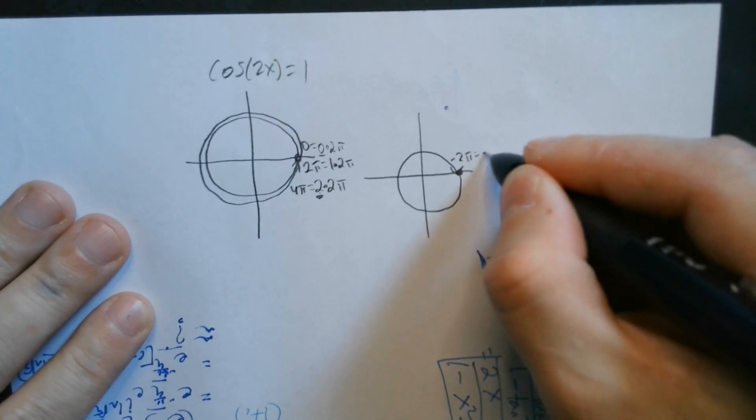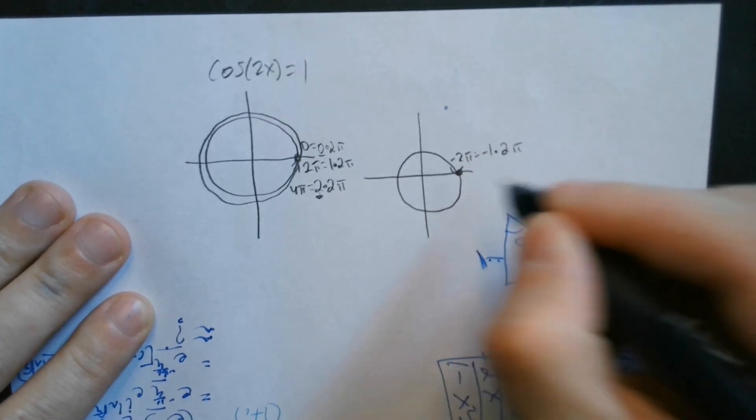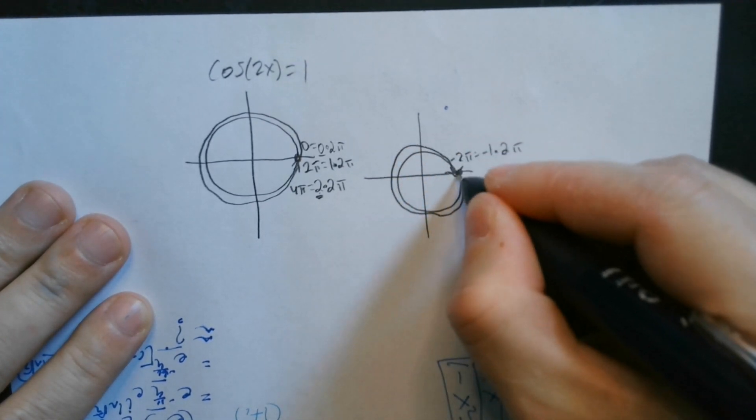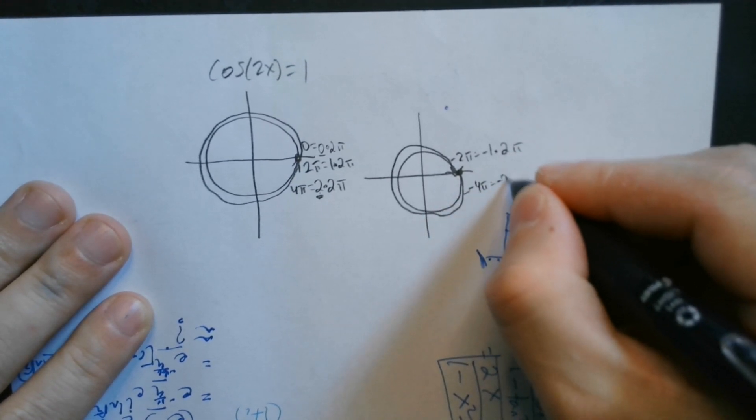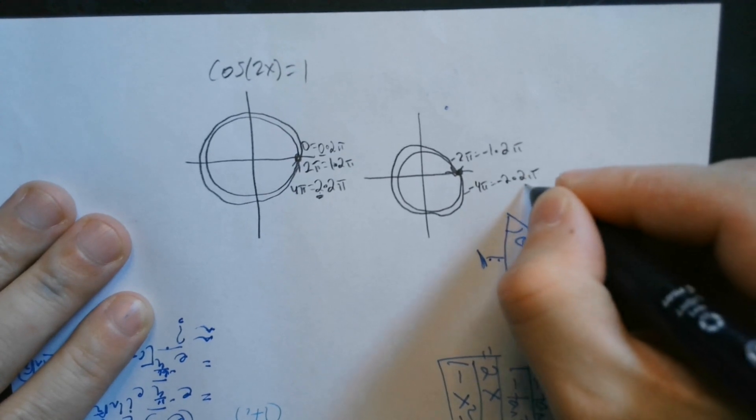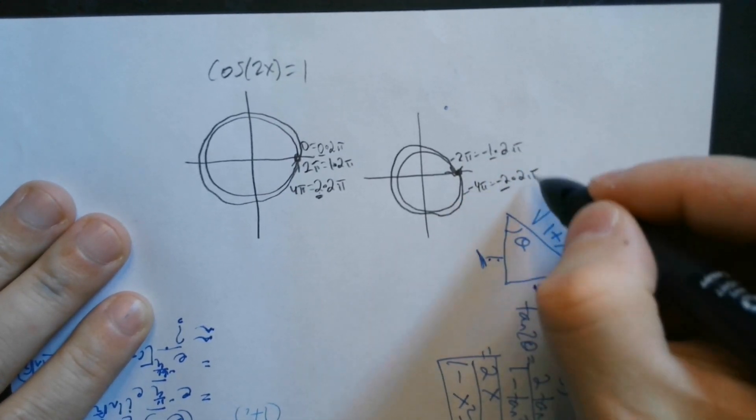That's negative 2 pi, which is negative 1 times 2 pi. But then you can spin and come back. That's going to be, for this one, negative 4 pi, but that's negative 2 times 2 pi. Again, everything here is a multiple of 2 pi.